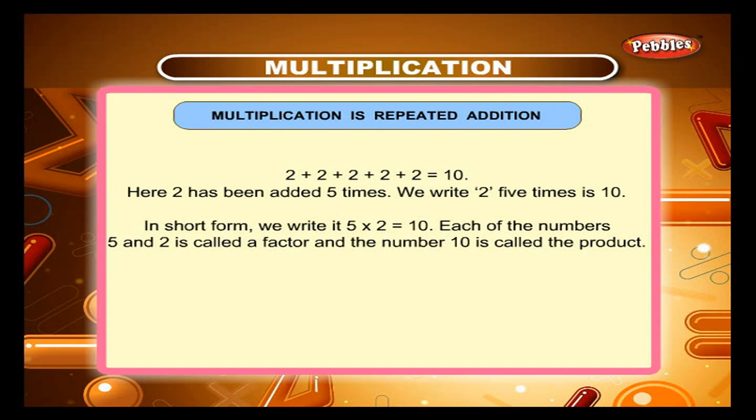Each of the numbers 5 and 2 is called a factor, and the number 10 is called the product.